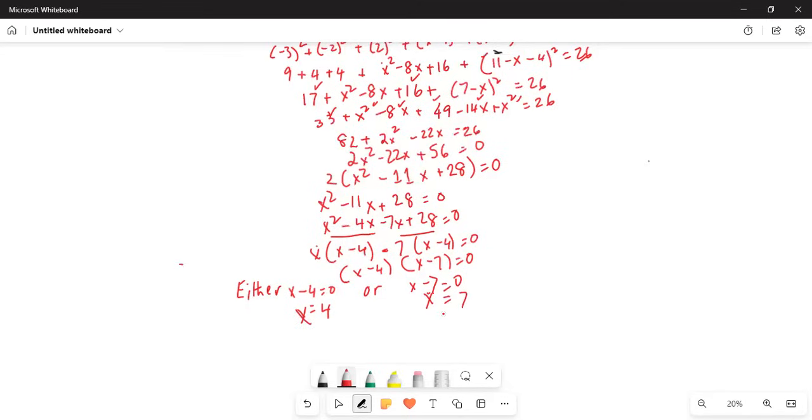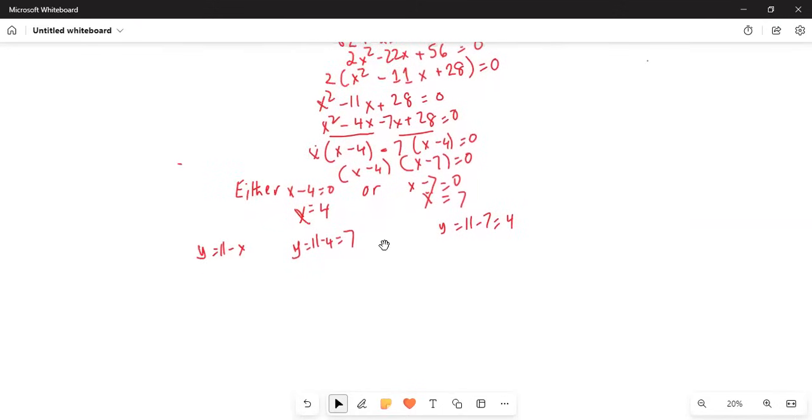So we know y is equal to 11 minus x, so when x is 4, y is 11 minus 4 is 7 and when x is 7, y is equal to 11 minus 7 is equal to 4. So if I summarize this, the 2 missing numbers are 4 and 7. This is your answer.